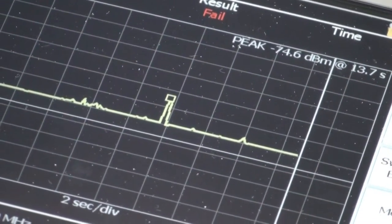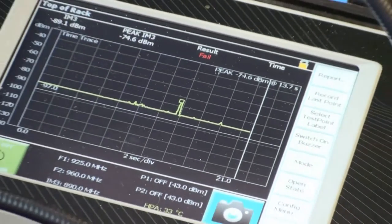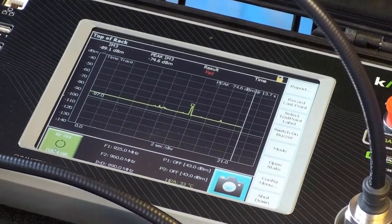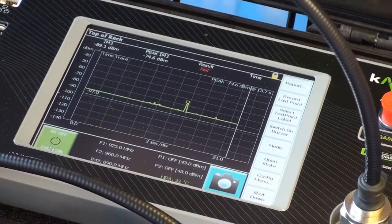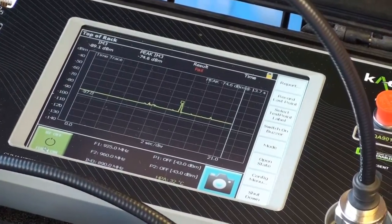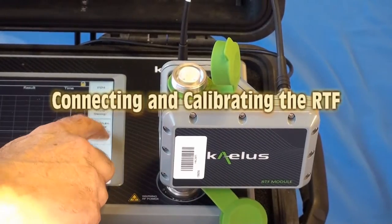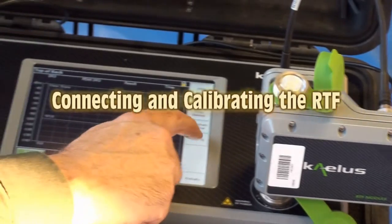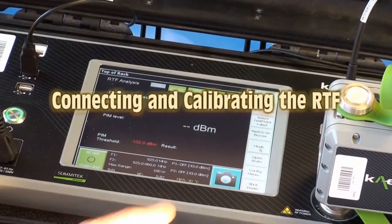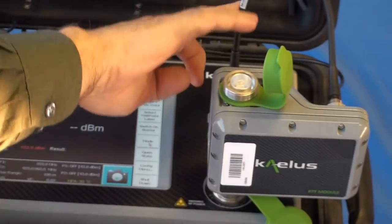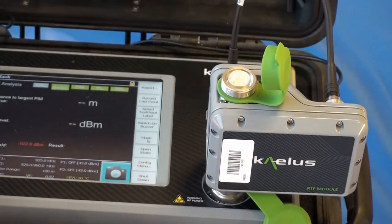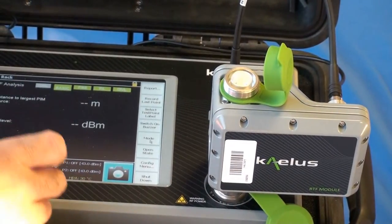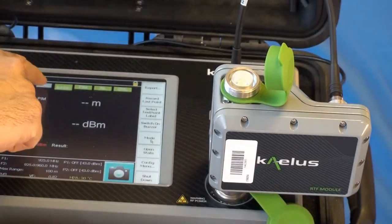The main other way of testing PIM is to use the RTF function. And to do that, we need to add the RTF module. So if we, to select the RTF, we go to mode and select the RTF function. The RTF is fitted with one RF cable and one USB connection. But before we can use it, we need to calibrate.